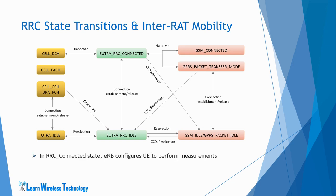When the UE is in EUTRA RRC connected state, it performs IRAT handover to UTRA or GRAN. Handover is a network-controlled procedure and the source access system — LTE network in this case — is responsible for preparation of the handover execution process, such as providing necessary information to the target access system to prepare radio resources. In RRC connected state, the UE and eNodeB may have set up at least one signaling radio bearer or data radio bearer and there might be ongoing data transfer.